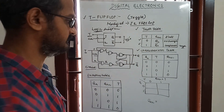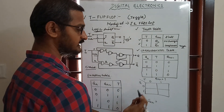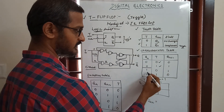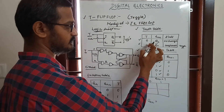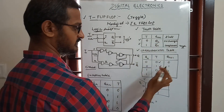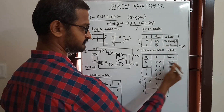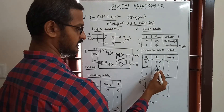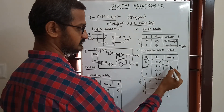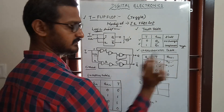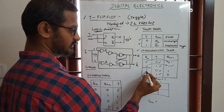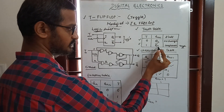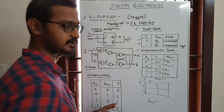Now let's see the characteristics table. The table has inputs T and present state Qn, and output next state Qn+1. When T is 0 and Qn is 0, next state is 0. When T is 0 and Qn is 1, next state is 1. When T is 1, the output is Qn bar — it is complementary. So when T is 1 and Qn is 1, then Qn+1 is 1 and Qn bar is 0.